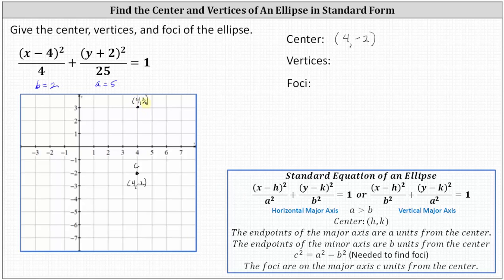Going back to the center, we now subtract five from the y-coordinate. Negative two minus five is negative seven, so (4, -7) is the other endpoint of the major axis. The length of the major axis is always equal to 2a units. Now let's find the endpoints of the minor axis, which is a horizontal axis.